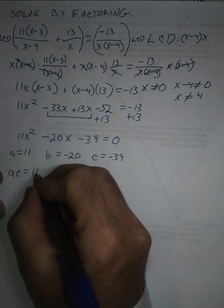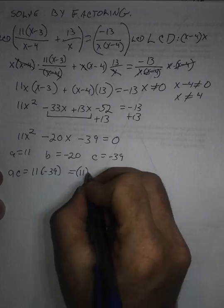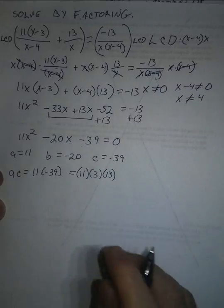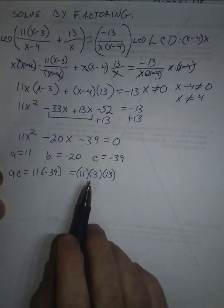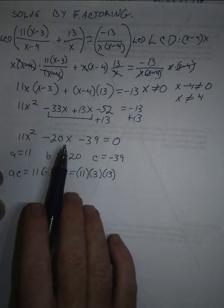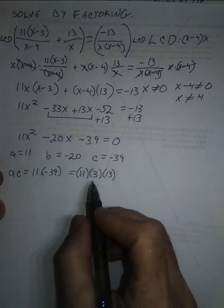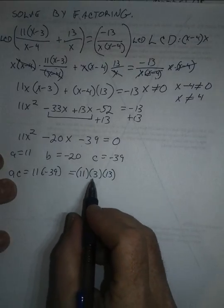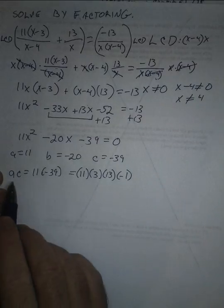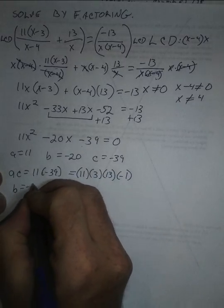So AC, I'm just going to write it as 11 times negative 39. I'll write it out as its factors, which is 11 times 3 times 13. But what I'm looking for, I probably shouldn't have squished these two together. Looking at this problem right here, it should be a negative sign. I need a negative 1 in here. One of these is going to be positive or negative. So AC is negative 1 times 3 times 13 times 11.